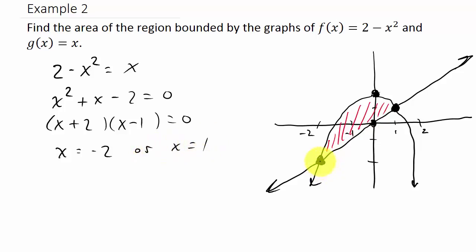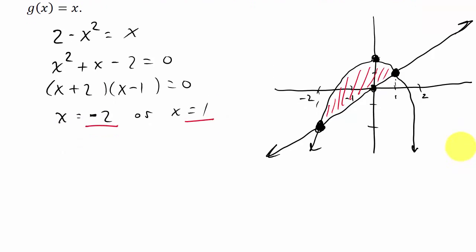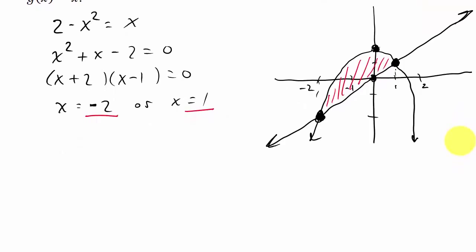So it looks like they intersect here at -2 and they intersect at x = 1. So my limits of integration will be -2 and 1. Now to find the area I'm going to integrate from -2 to 1. And remember it's the function on top minus the function on bottom.